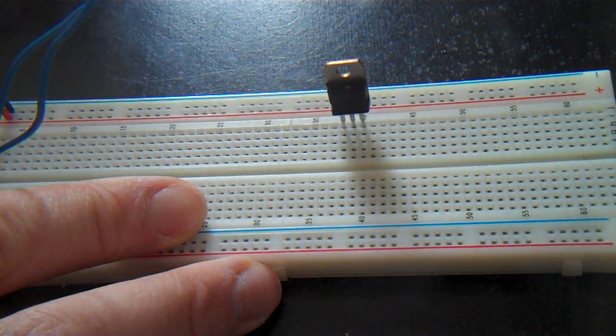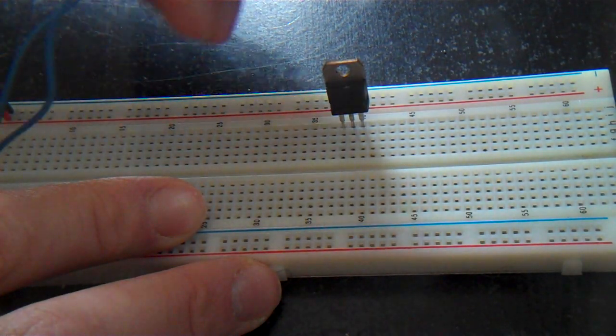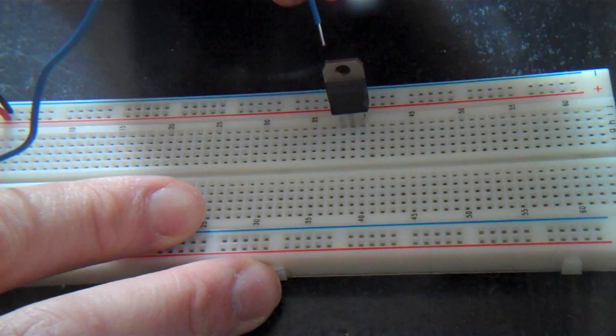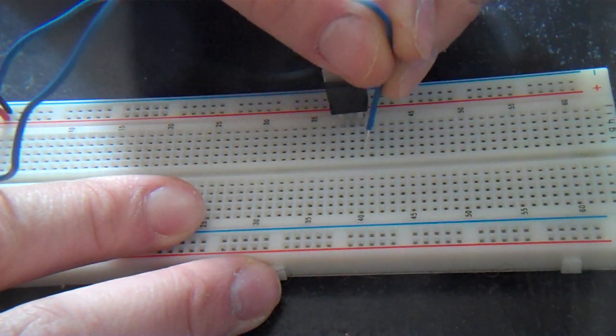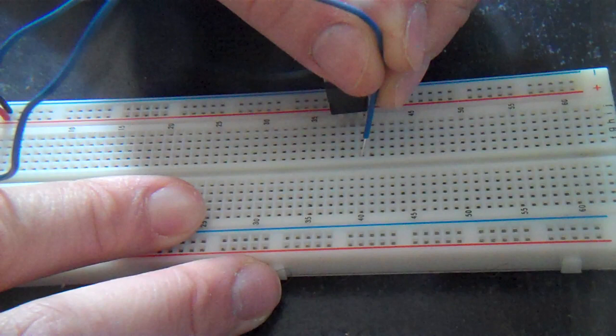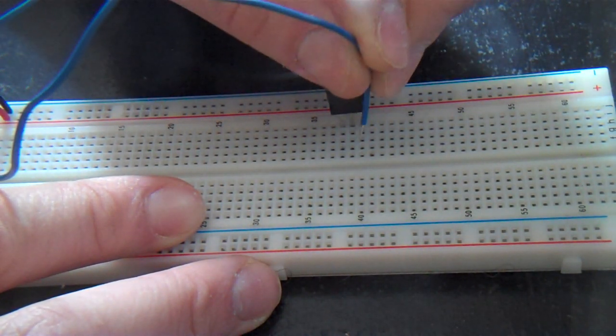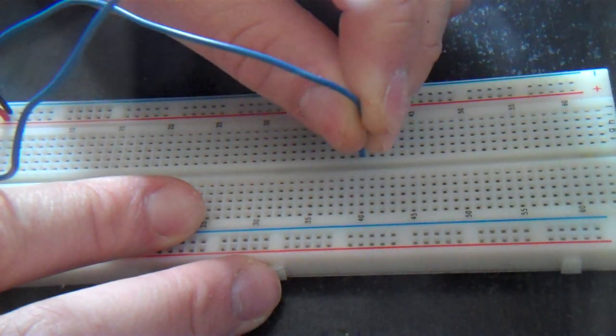Then the second thing I'm going to connect is the ground from my audio cable. Now, the ground wire goes and connects to the pin on the TIP 31 that's all the way to the right. Just like that.